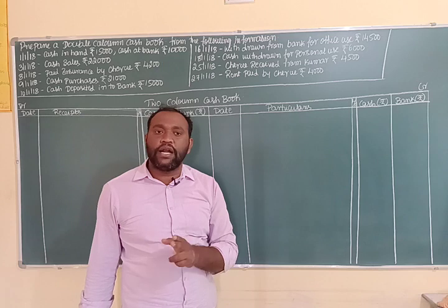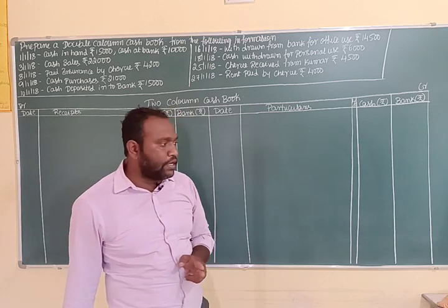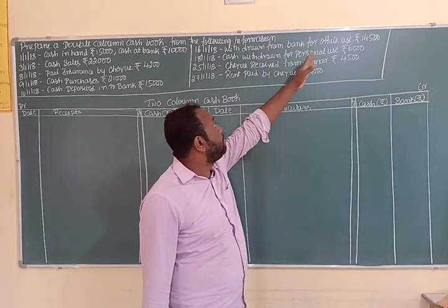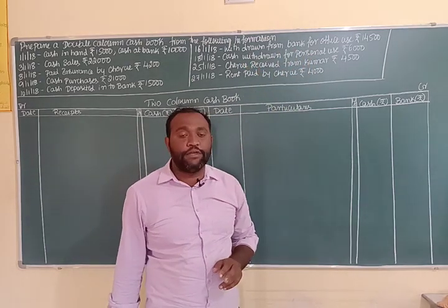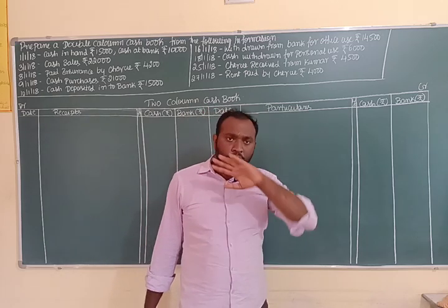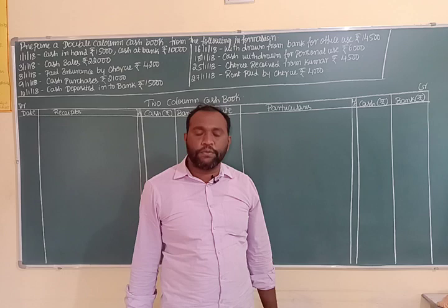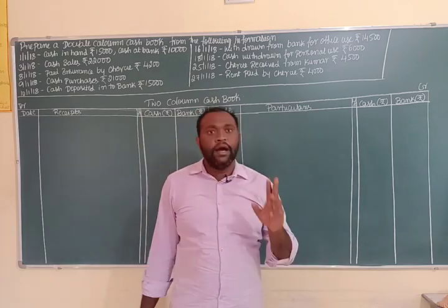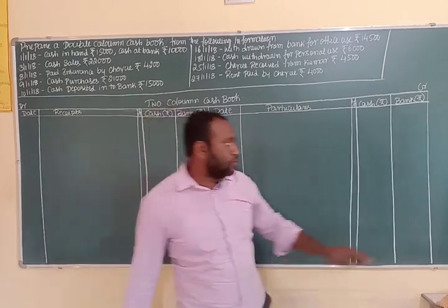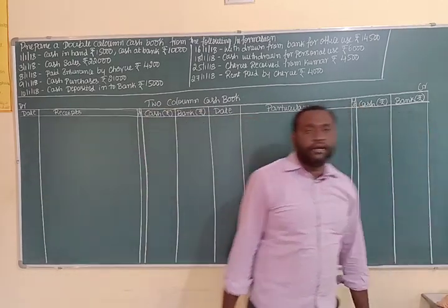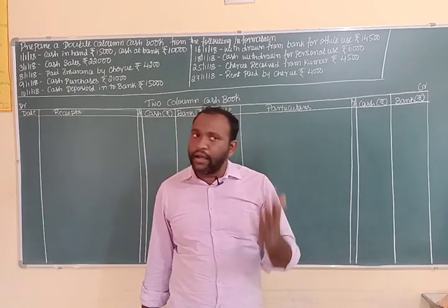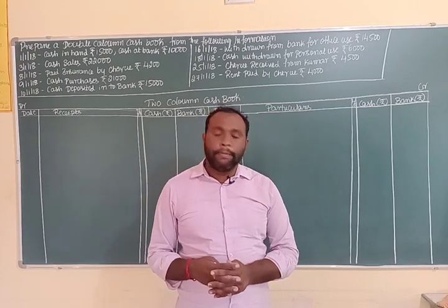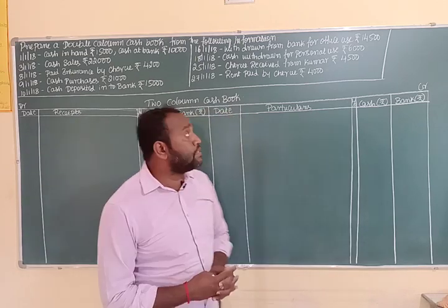So it is treated as a contra entry — we do not make a separate bank entry. Similarly, cash withdrawn from bank for office use: cash account debit to bank account. Cash depositing into bank and cash withdrawn for office use are both treated as contra entries, affecting both sides of the cash book — cash column and bank column.